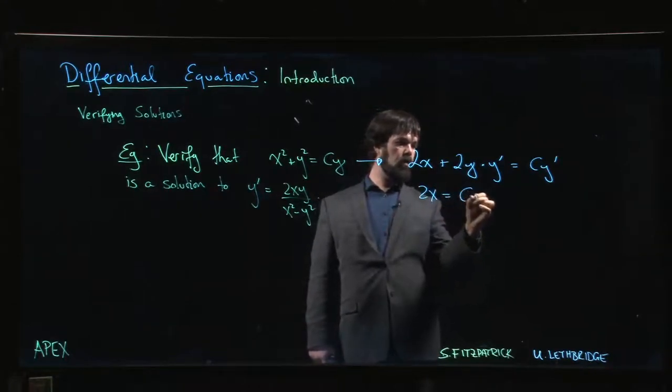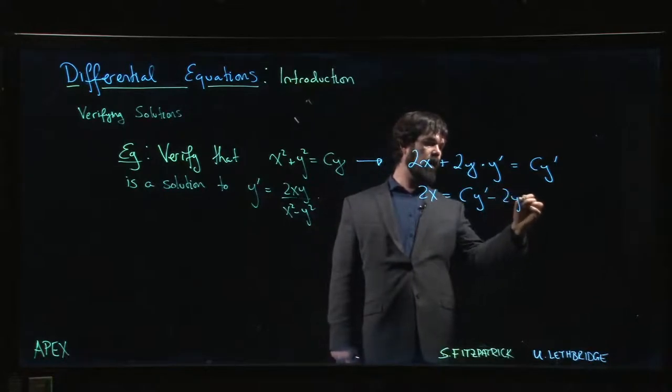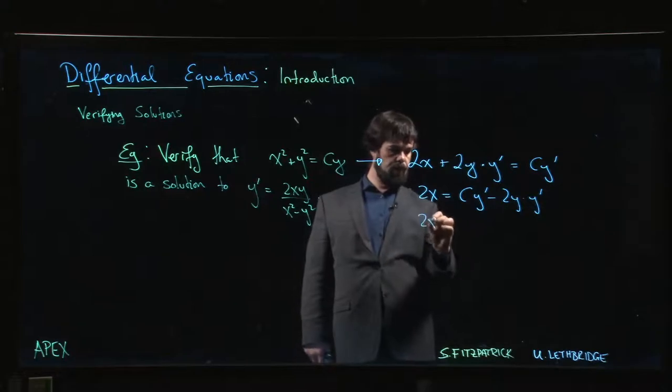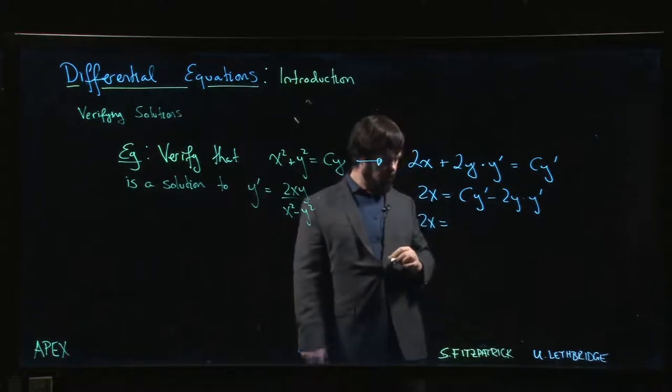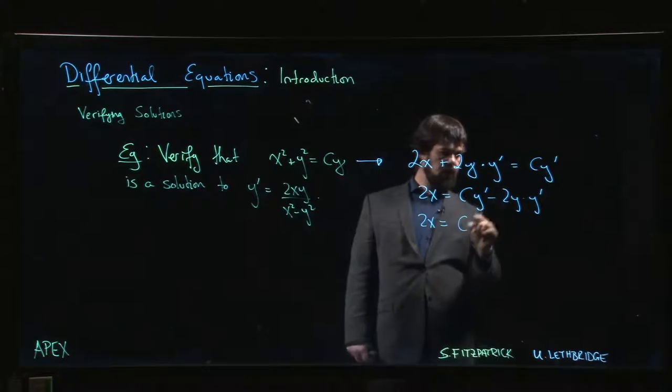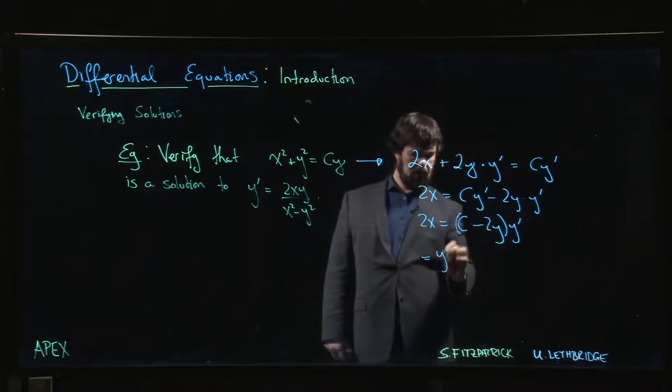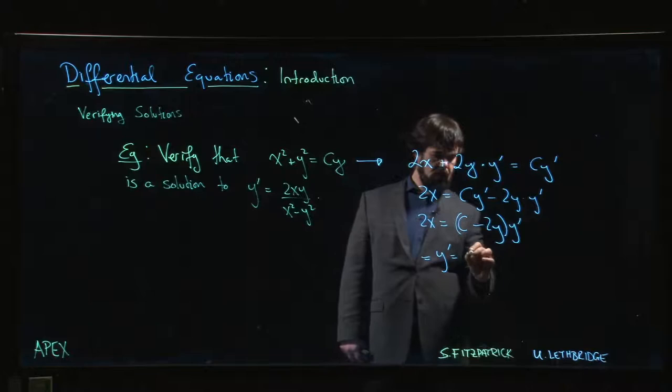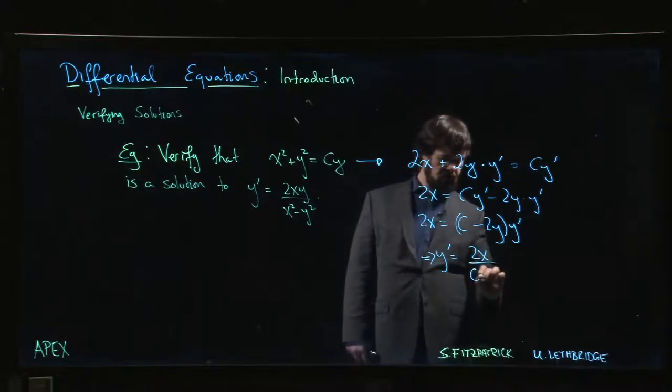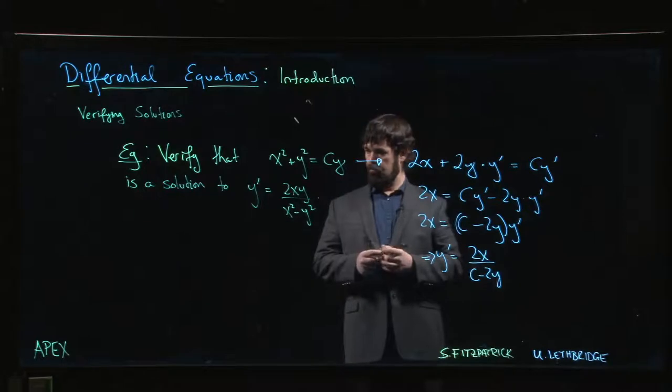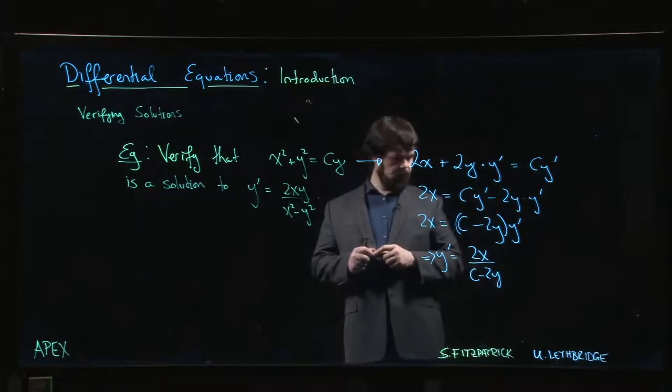Collect terms: 2x equals c y prime minus 2y y prime. Factor out that y prime: we get c minus 2y times y prime. So y prime equals 2x over c minus 2y.